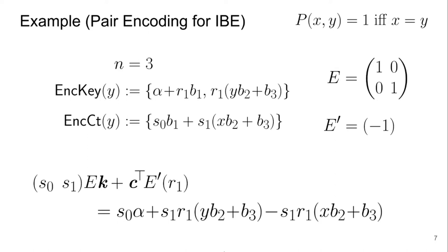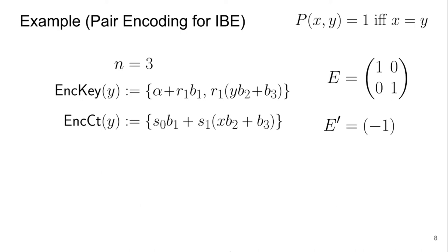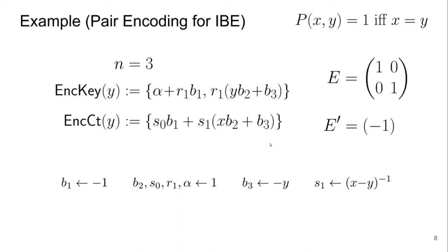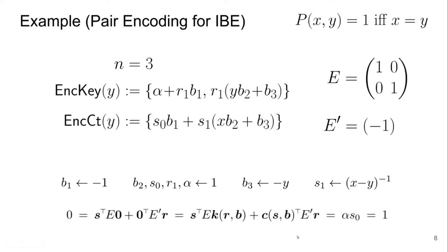Non-reconstructability is more involved, but there is a nice way to show it for this example: find an assignment of the variables that vanishes all the polynomials. You can check that such an assignment vanishes all polynomials but does not vanish s0 times alpha, because s0 and alpha are both equal to one. If that happens, then you cannot have reconstructability — otherwise you derive a contradiction that 0 must equal 1. This assignment uses the inverse of x minus y, so it is only well defined when the predicate is false, which is exactly what we want.